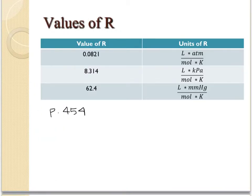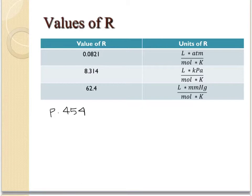This table of R values will be given to you on the test or quiz, and you can also find it on page 454 in your textbook. There are three different values, and the only thing that varies between them is the unit used for pressure. If you have atmospheres, use 0.0821. If pressure is in kilopascals, use 8.314. And if you're using millimeters of mercury, use 62.4 for your R value. It all comes down to your unit of pressure.